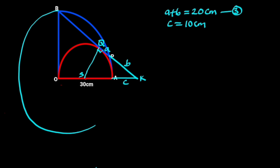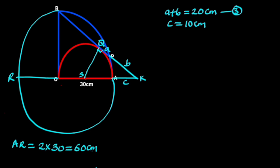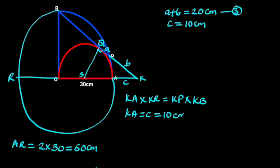Next, we turn the quarter circle into a full circle and extend line OA to touch the circle; let the point of intersection be R. Note that line AR equals 2 times 30, which is 60 centimeters — AR is the diameter of the full circle. We apply the secant theorem: KA times KR equals KP times KB. From the figure, KA equals c, which is 10 cm, and KR equals 10 plus 60, which is 70 centimeters.